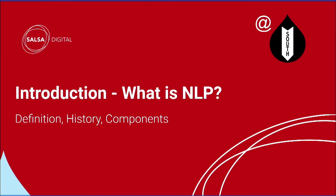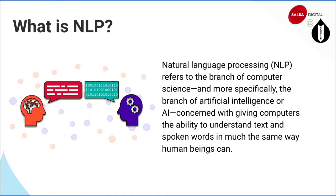What exactly is the meaning of 'natural'? If I say 'hi man' you can understand, if I say 'hello brother' you can understand — this is all about natural language. By definition, NLP refers to the branch of computer science, specifically artificial intelligence, concerned with giving computers the ability to understand text or spoken words in much the same way a human being can.